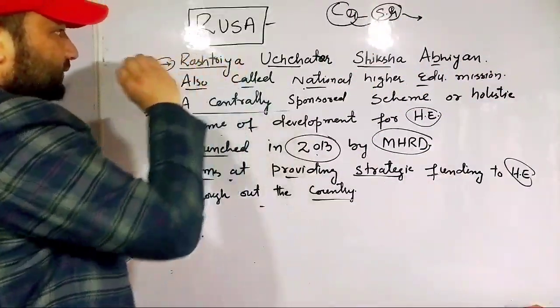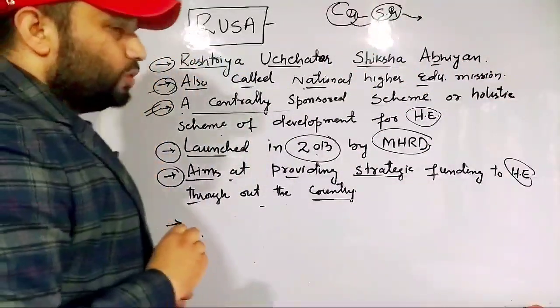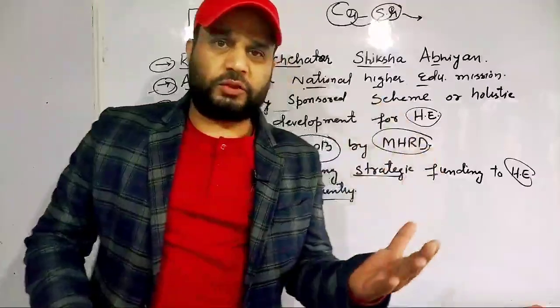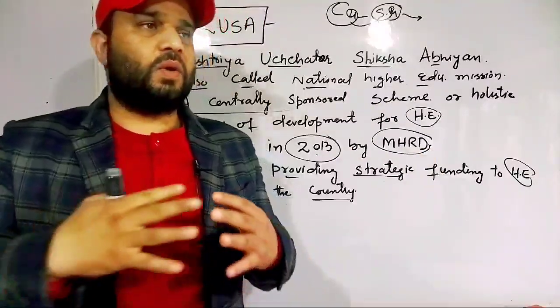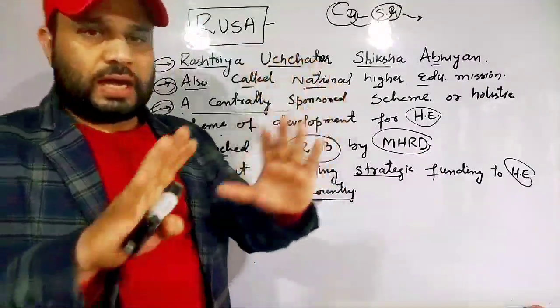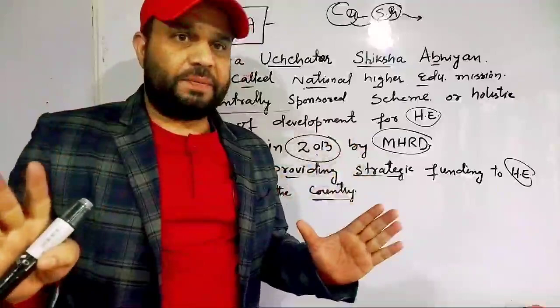The main objective of RUSA was related to improving the enrolment ratio, and when you study RUSA in detail, you will find how many colleges were developed and how many are still under process.